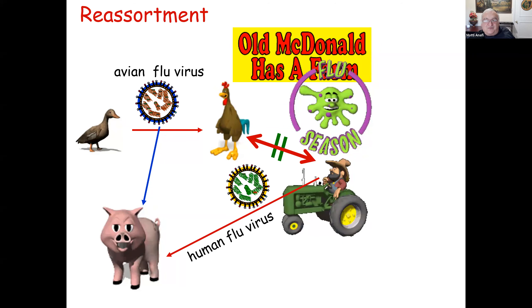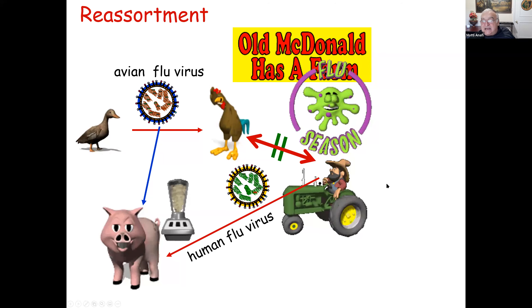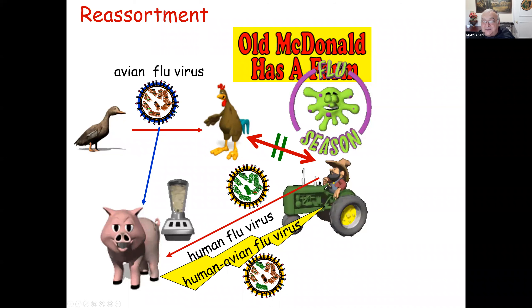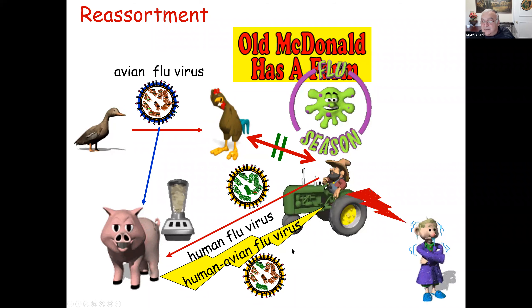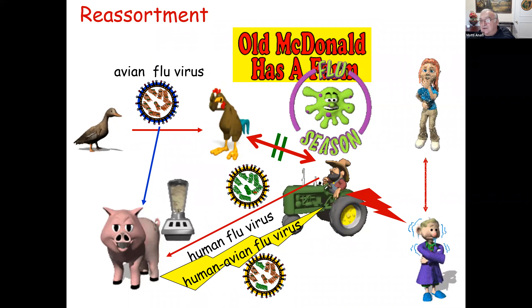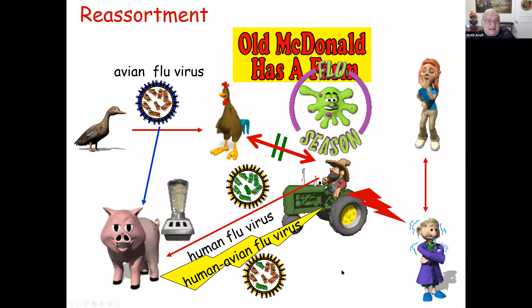When those two viruses are infecting one cell, they are going to exchange pieces in a way that a hybrid virus is going to be produced. If this hybrid virus can then be transmitted between people, you are going to have a significant pandemic with a virus that people have never had the chance to see before — and against which they have absolutely no immunity.